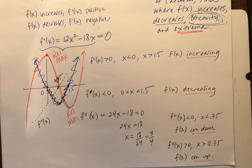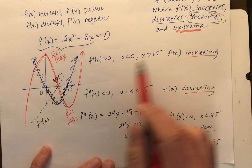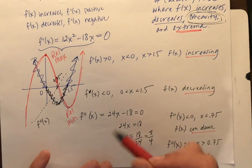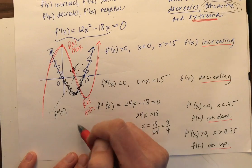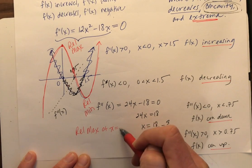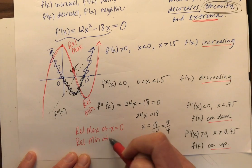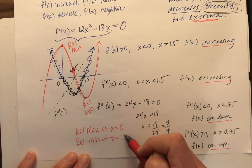So all this information here, relative, let's see, we've got our concavity, increasing and decreasing intervals. I'm going to come over here, relative max at x equals zero, relative min at x equals 1.5.